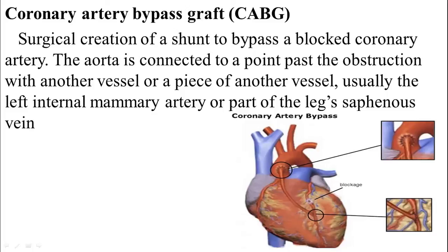In CABG — coronary artery bypass graft — the artery is connected past the obstruction with another vessel or a piece of another vessel. Usually the doctor utilizes the left internal mammary artery or left internal thoracic artery, or can utilize part of the saphenous vein from the leg, to bypass the blockage of blood supply.